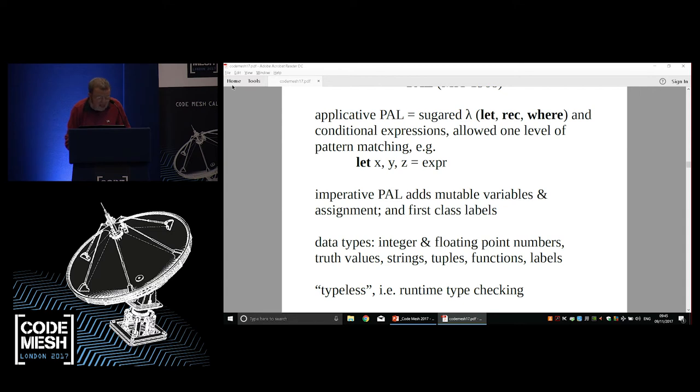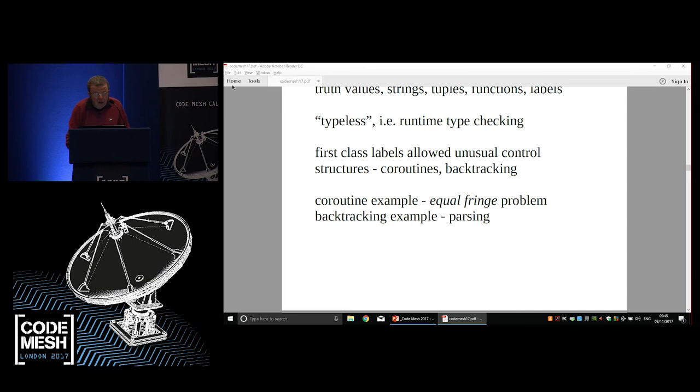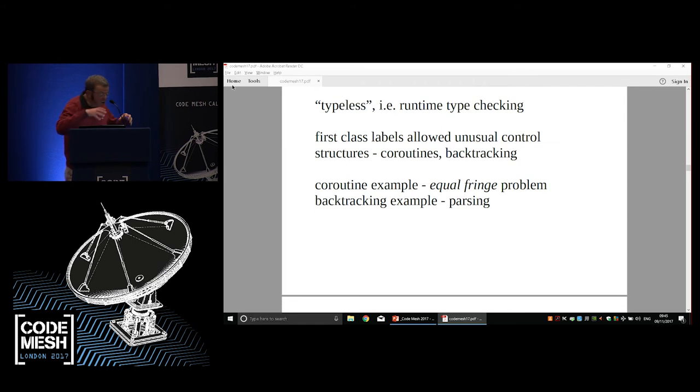PAL was typeless with runtime type checking. First-class labels allowed unusual control structures, coroutines for example. The standard example where you need coroutines is you've got two trees of different shapes, and you want to go around the fringe and see if they have the same leaves in the same order. You can do that with coroutines because you have two different recursive functions talking to each other with interrupt and resume. An example where you need backtracking is writing a general purpose parser. One of the things on the PAL tape was a five-line package for parsing an arbitrary BNF which used first-class labels to do backtracking.